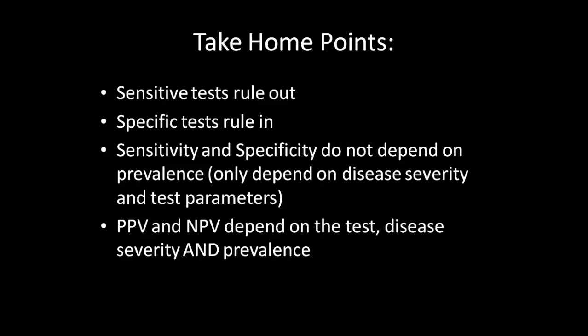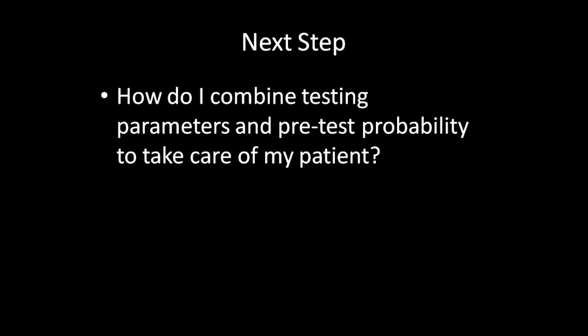From this talk, you should know that a sensitive test that is negative is useful to rule out a disease. A specific test that is positive helps rule in a disease. Sensitivity and specificity do not depend on prevalence — they only depend on disease severity and test parameters. On the other hand, positive and negative predictive value depend on the test specifically, as well as on disease severity and prevalence. The next step will be combining the information we learned about prevalence, pre-test probability, and treatment and testing thresholds with the parameters of these tests to make evidence-based decisions about patient care.